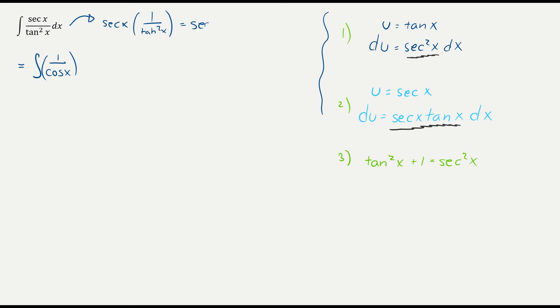Well, what is 1 over tangent squared? That's just cotangent squared. Because the reciprocal of tangent is cotangent. So therefore, we have cotangent squared and cotangent is cosine over sine squared.